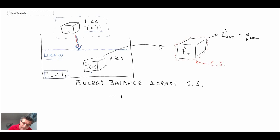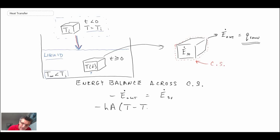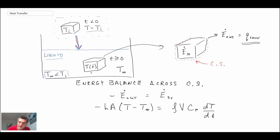The energy balance is simply: the energy leaving equals the change of energy within our chunk of mass. The energy leaving via convective heat transfer gives a minus sign, so that's minus hA times (T minus T-infinity), and that equals the change in energy within the object itself. For that we use mc dT/dt, so that's density times volume times specific heat capacity times the change in temperature per unit time. We now have a differential equation.